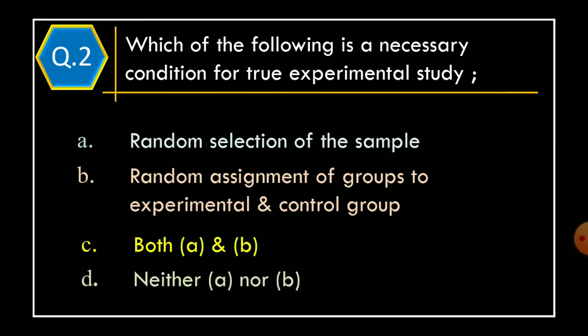Question 2: Which of the following is a necessary condition for true experimental study? Option A: random selection of the sample. Option B: random assignment of groups to experimental and control group. Option C: both Option A and B. Option D: neither Option A nor Option B.